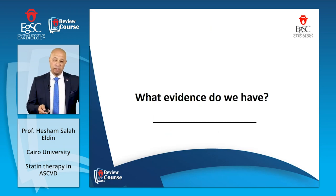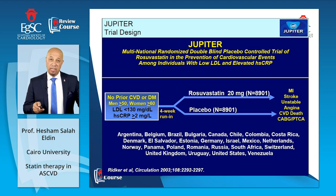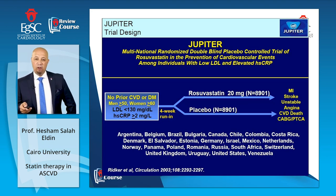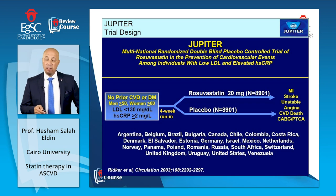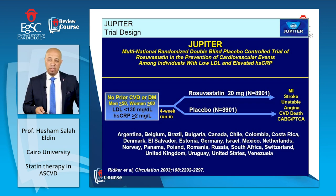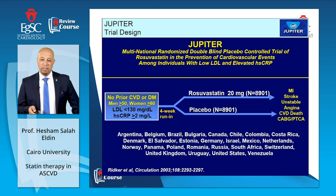In the JUPITER trial, patients had no prior cardiovascular disease or diabetes, were men 50 years or older or women 60 years or older, with an LDL cholesterol below 130 mg/dL, but a high-sensitive C-reactive protein of 2 mg/L or more. After a four-week run-in period, patients were randomized to rosuvastatin 20 mg versus placebo, with a primary endpoint of myocardial infarction, stroke, angina, cardiovascular death, or CABG/PTCA.